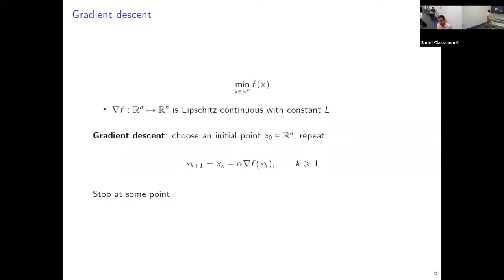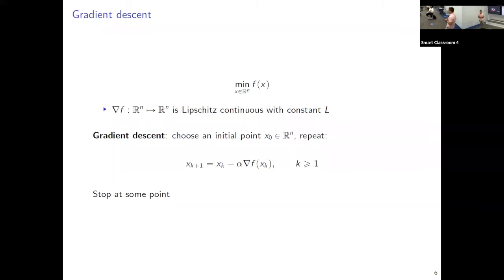If you have some objective function f and you want to minimize it with no constraints, the first thing is to take a derivative or gradient of the function. We'll use gradient descent to minimize f of x. We just say that the gradient is Lipschitz continuous with parameter L, and then the gradient descent algorithm is extremely simple.